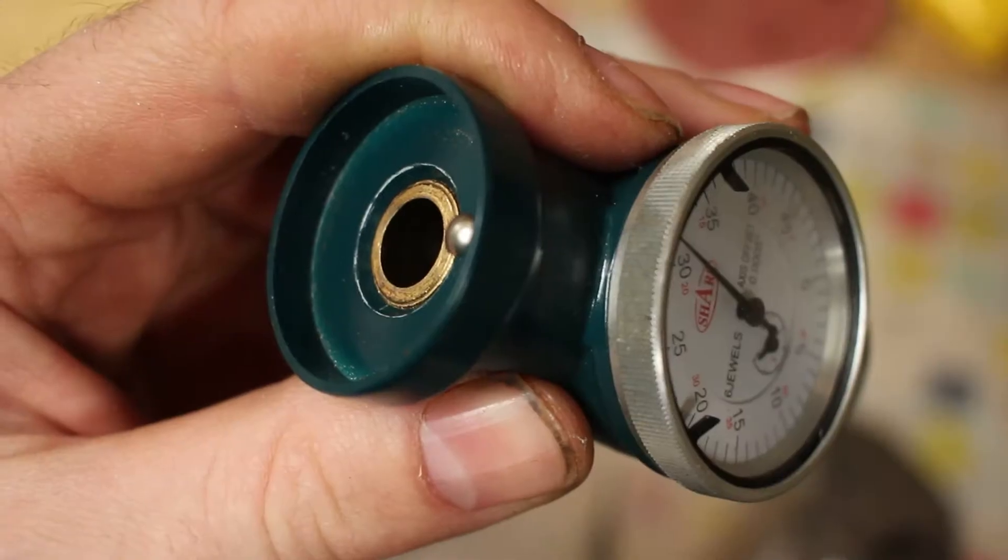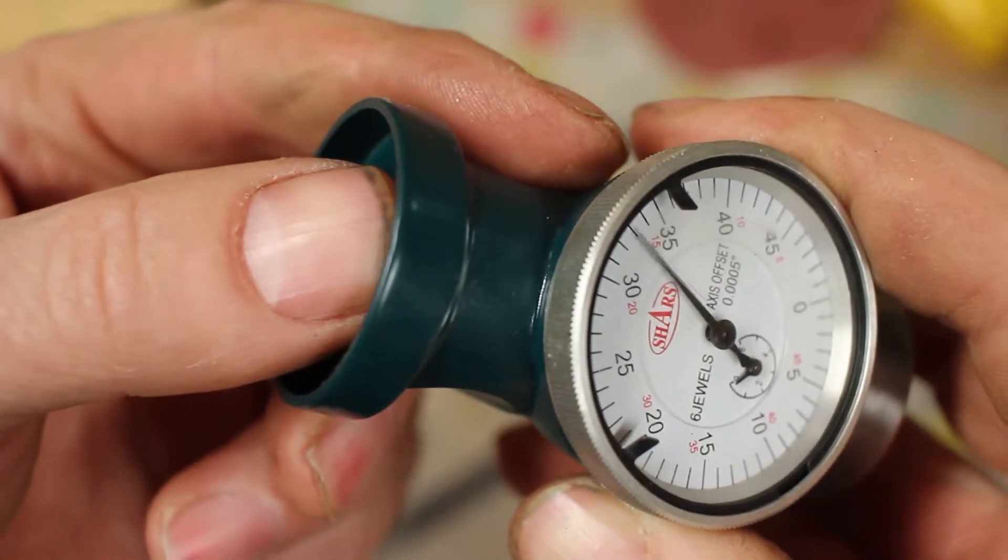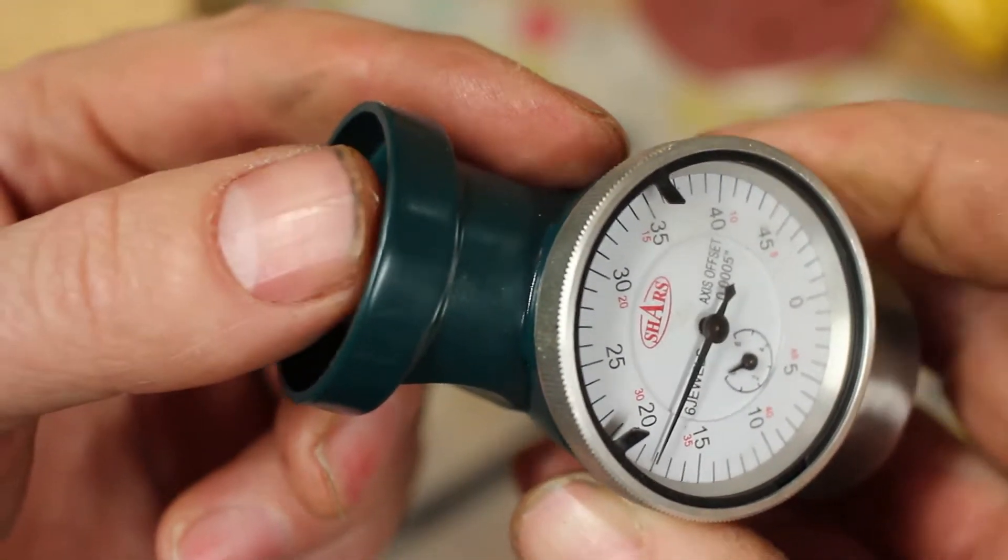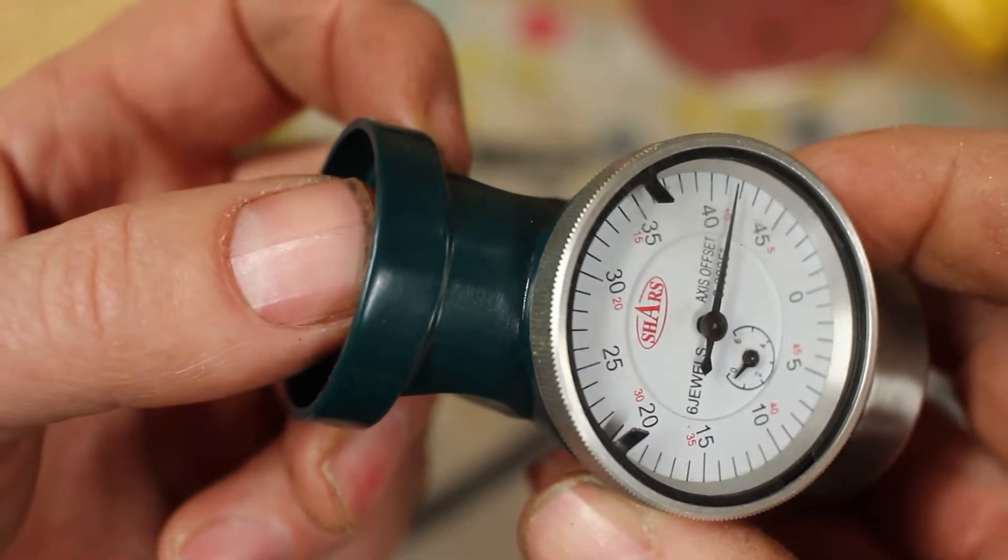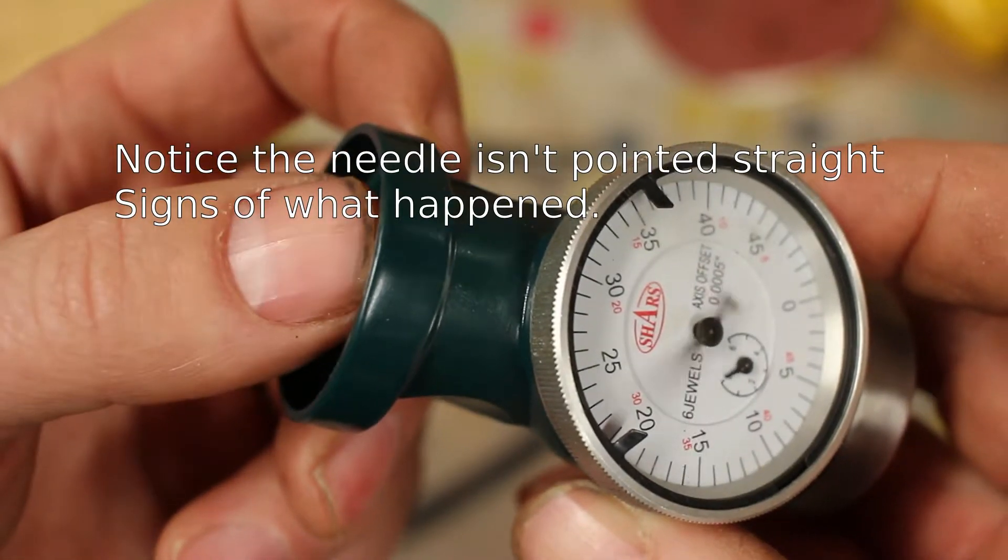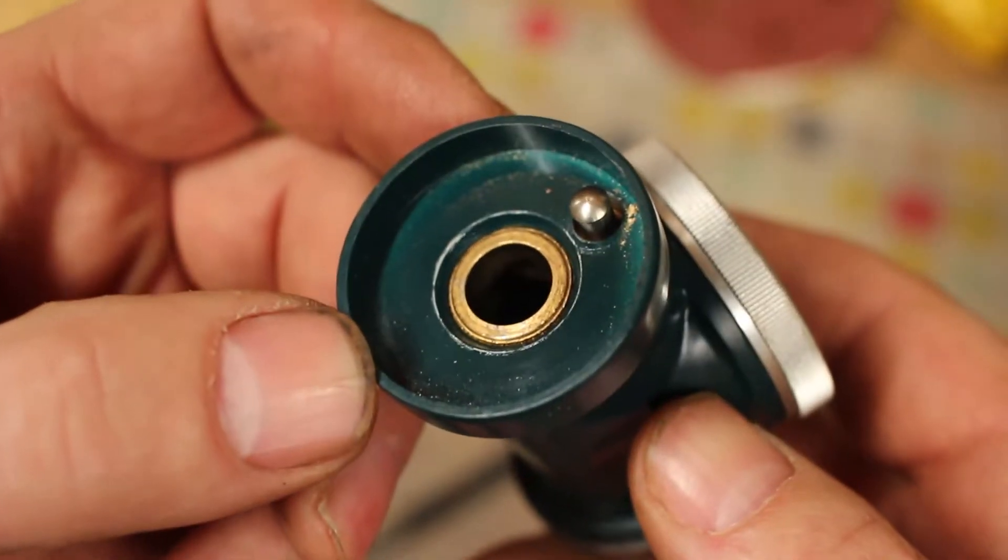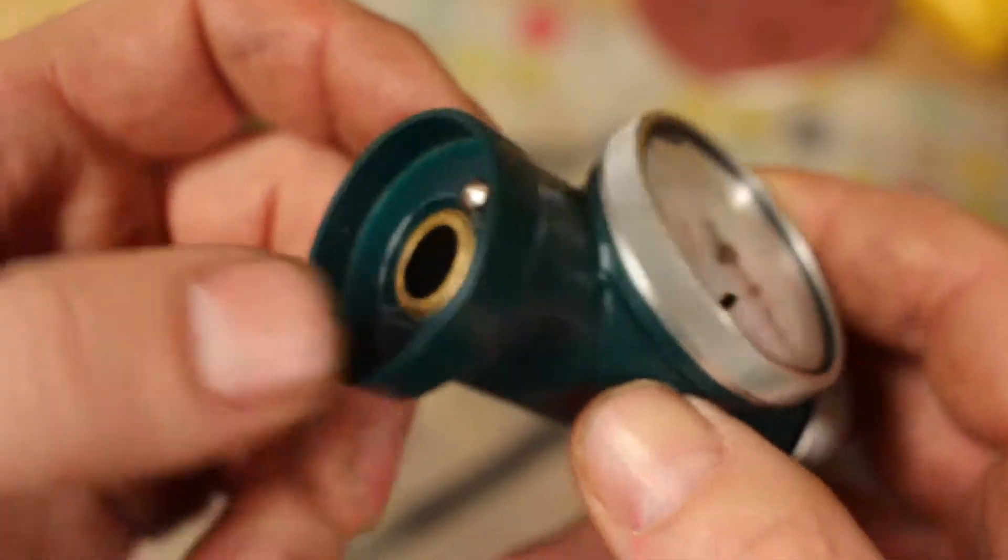Now there's this plunger here, and that's what moves the dial. You can see that plunger doesn't consistently move the dial. It's like it's hung up. So I'm going to take it apart even further.